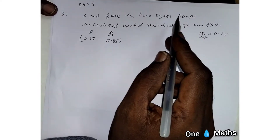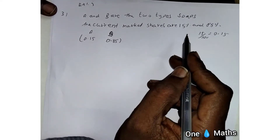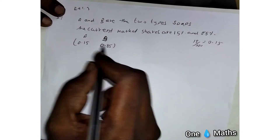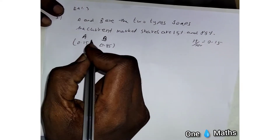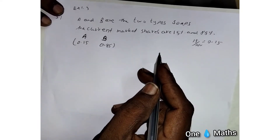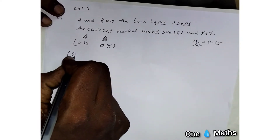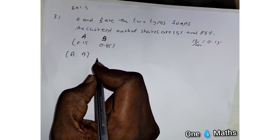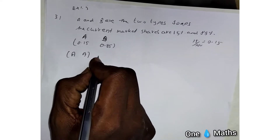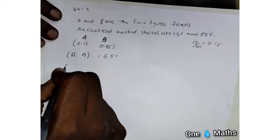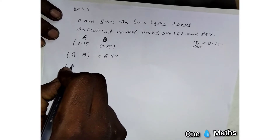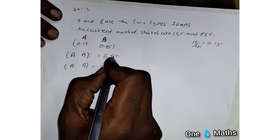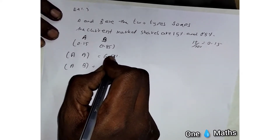After the first purchase, the person may buy soap A again or change to soap B. If a person buys soap A the first time and buys soap A again the second time, that percentage is given as 65 percentage (0.65). If they switch from soap A to soap B, that percentage is 35 percentage (0.35).